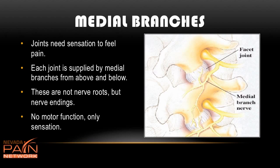The medial branches — as you can see in this picture — supply sensation to each facet joint. Here's a facet joint with the soft tissue capsule around it. Every joint has to have sensation in order to feel pain; if a joint has no nerve supply, it's not going to feel anything. Here's a nerve root coming out from the spine, and off of it you have these medial branches that supply sensation to the joint. They're not nerve roots — they're nerve endings, and they don't supply any motor function; it's only sensation.